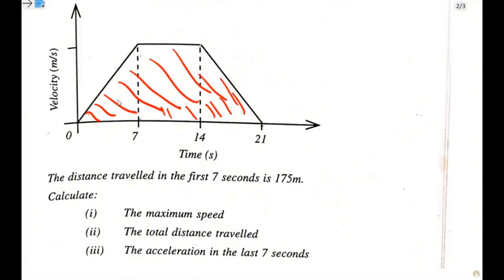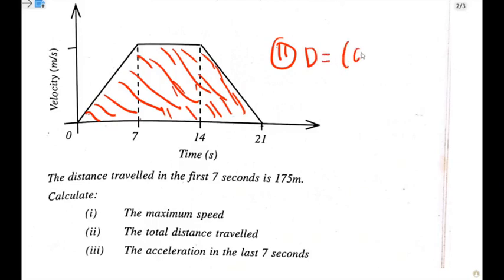You can also consider this as a rectangle and a triangle, find that distance, then add it to the 175. For the trapezium approach, the formula is: distance equals open bracket A plus B close bracket times H, divided by 2. From here, let us identify the values representing each letter.